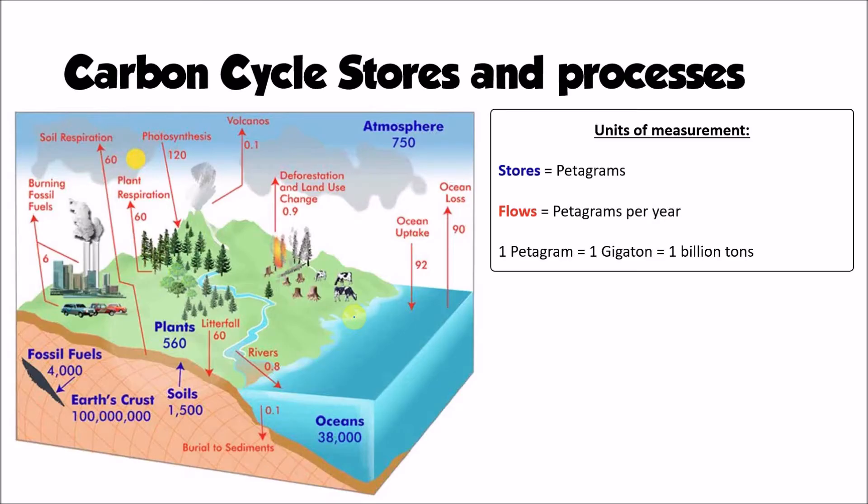This revision video is going to examine the main stores and processes or flows within the carbon cycle. We can see an example of all of those different flows and stores on the diagram on the screen. It's worth noting that the numbers on this diagram are given in petagrams, so that's the equivalent of one gigaton or one billion tons of carbon. For example, the uptake from the ocean being 92, that's 92 petagrams per year or 92 gigatons or 92 billion tons per year. The stores however are given as total amounts stored in each of those reservoirs.